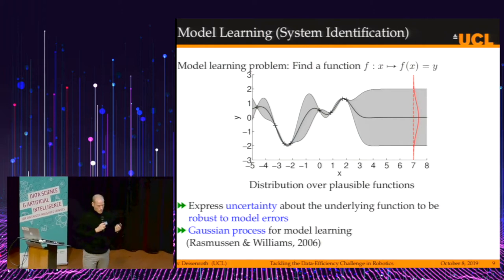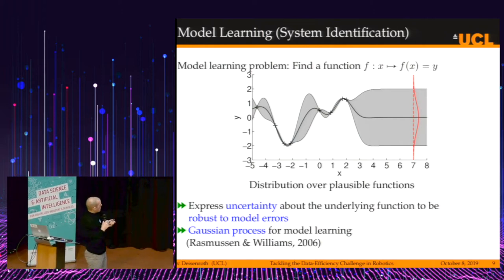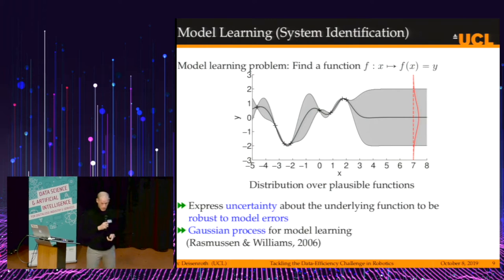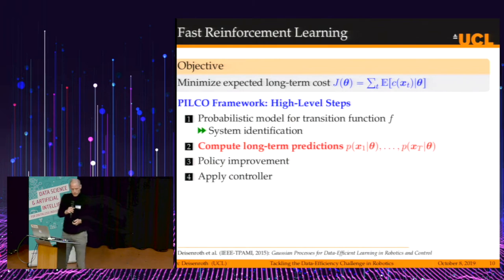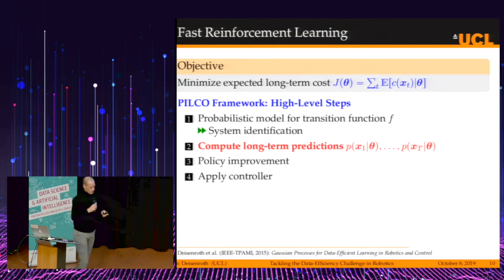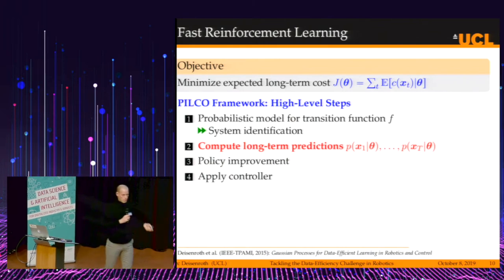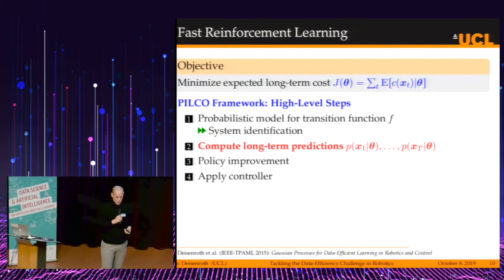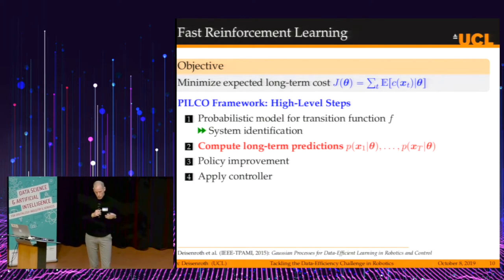I will use a Gaussian process to implement this distribution over plausible transition functions. Now that we have this Gaussian process for learning the transition function, we are going to use it for making long-term predictions.